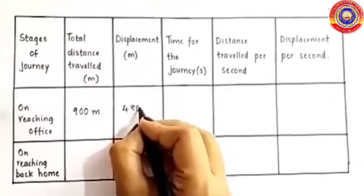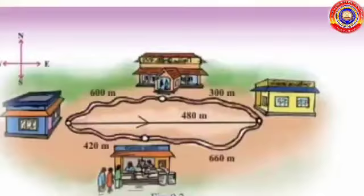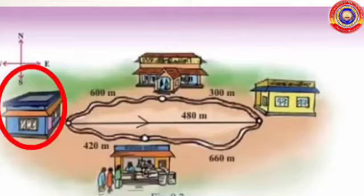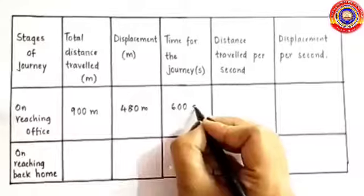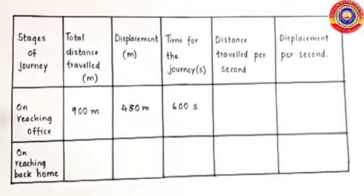Next is displacement. We know displacement is the shortest straight-line distance between the initial and final point. Home is the initial point and office is the final point, so the straight-line distance between them is 480 metres.